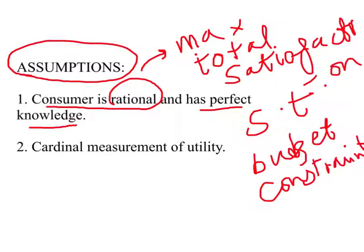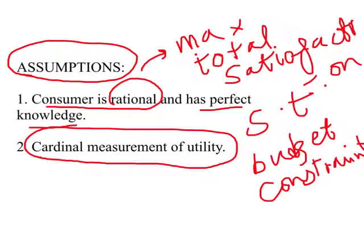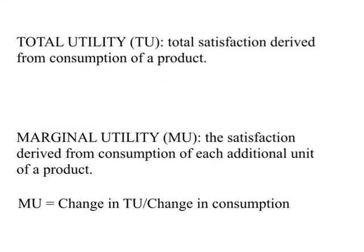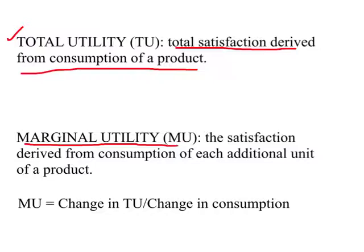The second assumption we make is that this person can measure utility in precise terms — cardinal measurement of utility is assumed. As a first step, let us look at consumer preferences. We already know what utility is, so we distinguish between total utility (TU) — the total satisfaction derived from consumption of a product — and marginal utility (MU).